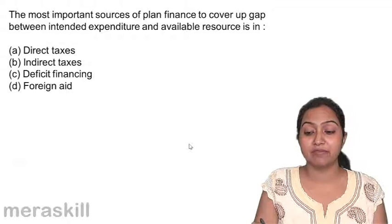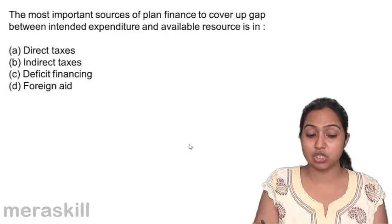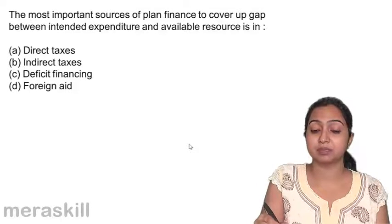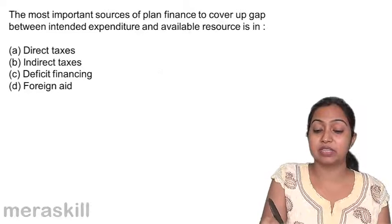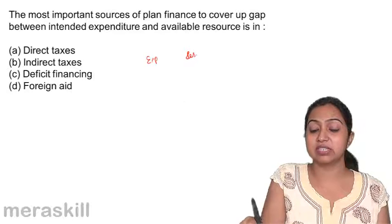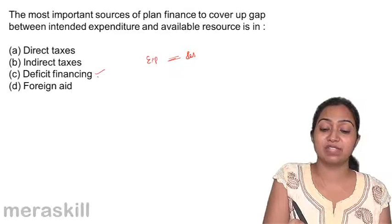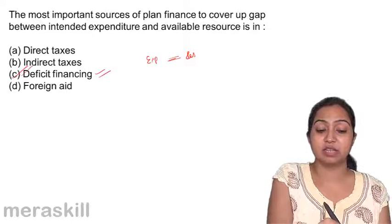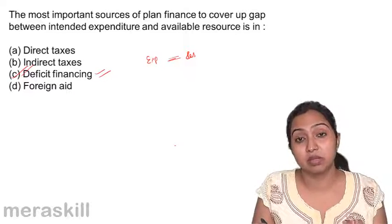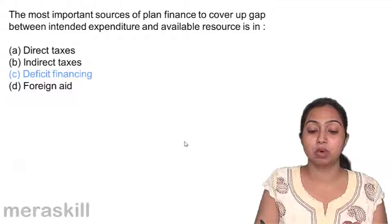The most important source of planned finance to cover the gap between intended expenditures and available resources — how does the government try to bridge the gap between expenditure and the revenues available? They try to do it by deficit financing. We have studied this before. Deficit financing is issuing more currency to meet up your demands; that is what the government considers the most important source.